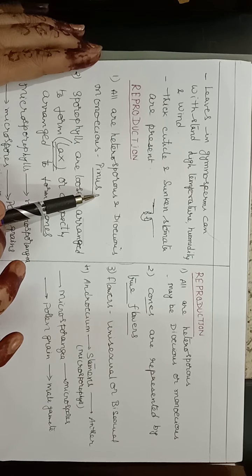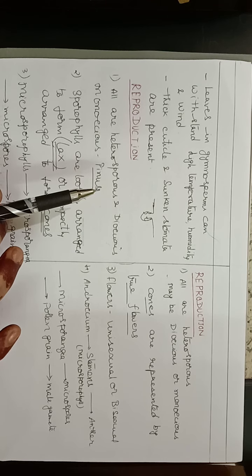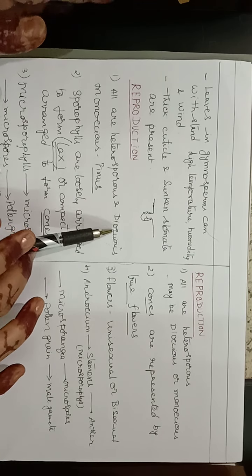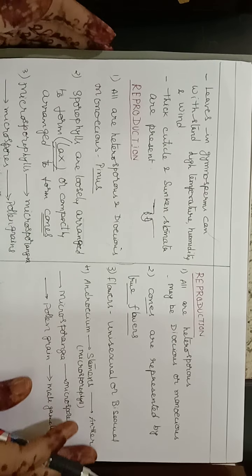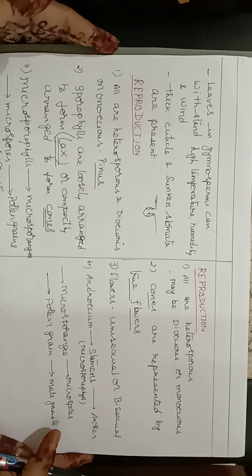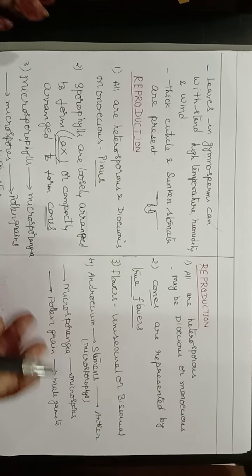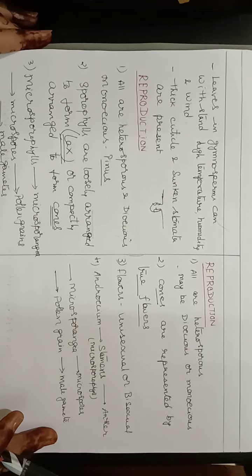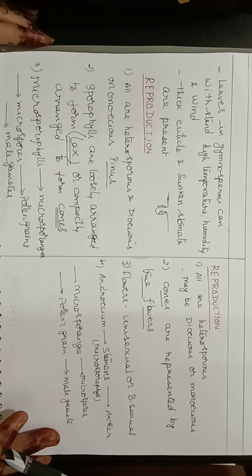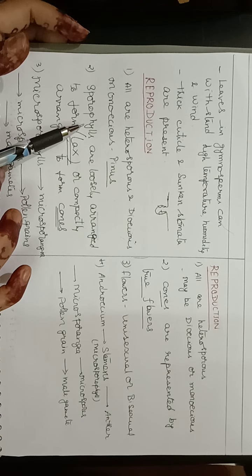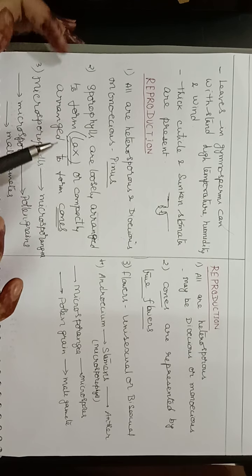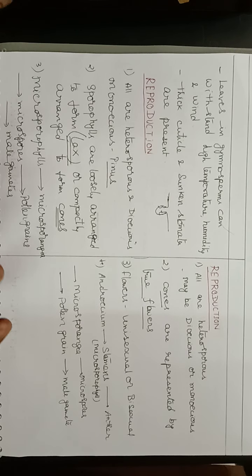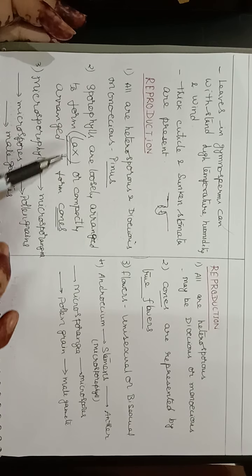In gymnosperms, cone formation is seen using reproductive leaves called sporophylls. If sporophylls are loosely arranged it is called 'lax'; if compactly arranged it is called a cone. Two types of sporophylls are present: microsporophylls and megasporophylls.